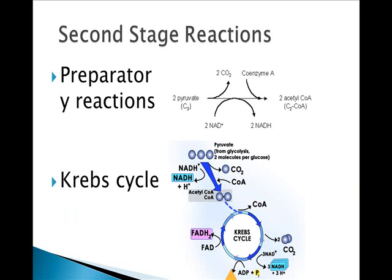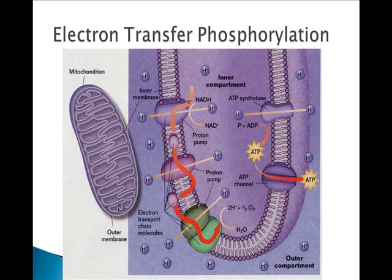In aerobic respiration, the Krebs cycle has two basic steps. Two molecules of ATP are produced by substrate-level phosphorylation. Carbon dioxide is released as a byproduct because you're breaking down those pyruvates into single-carbon molecules — carbon dioxide. Then we move into the big energy payoff, which is electron transfer phosphorylation, also called ETC — electron transport chain.